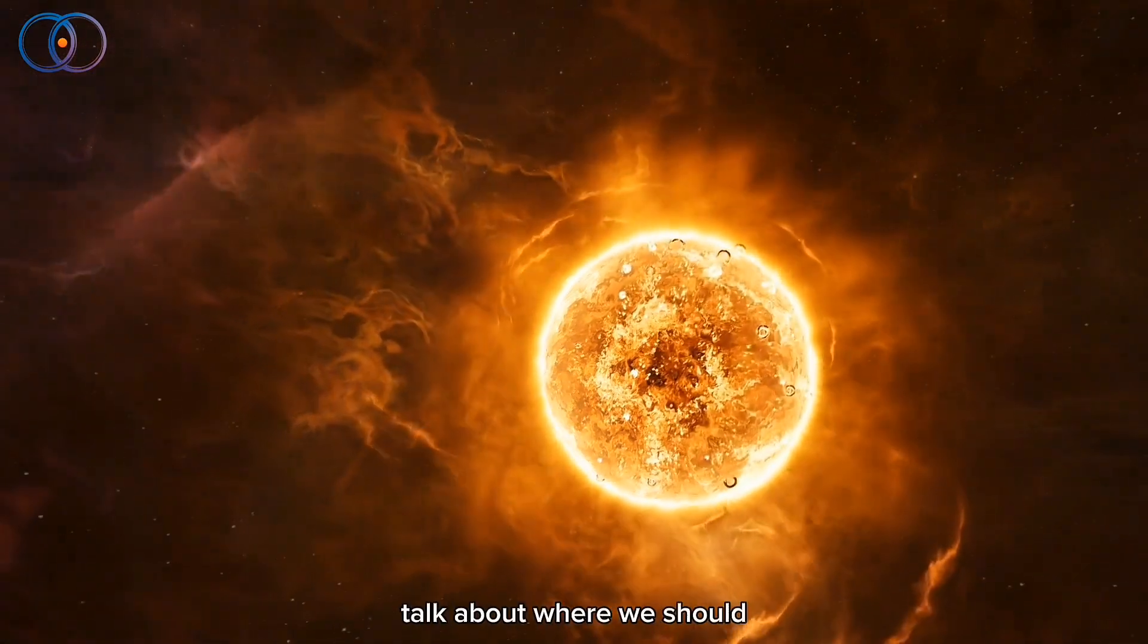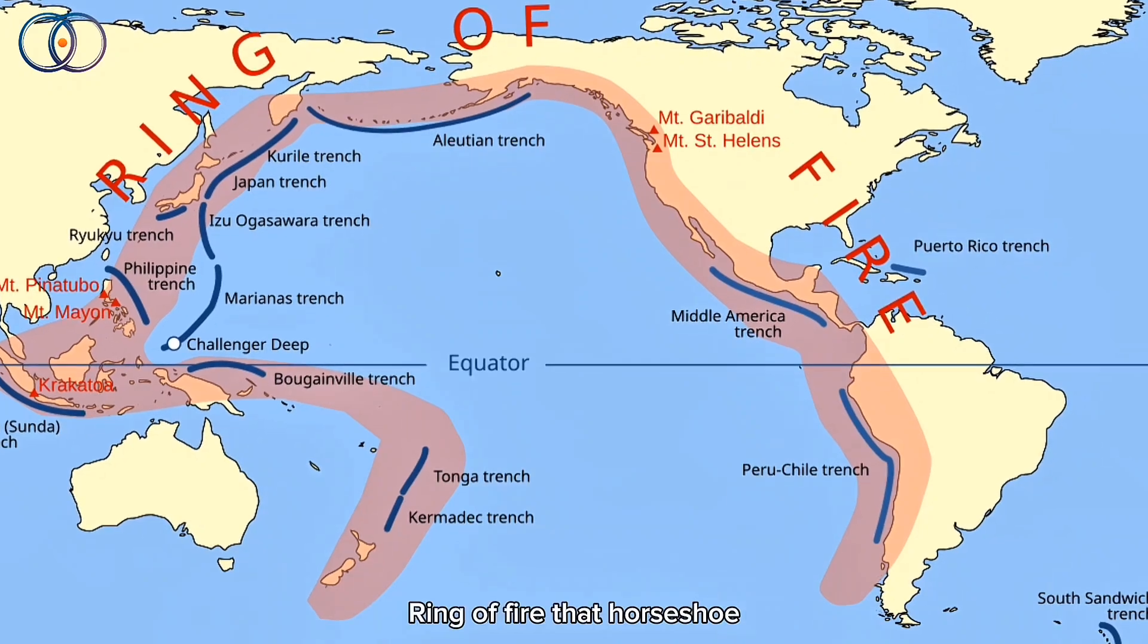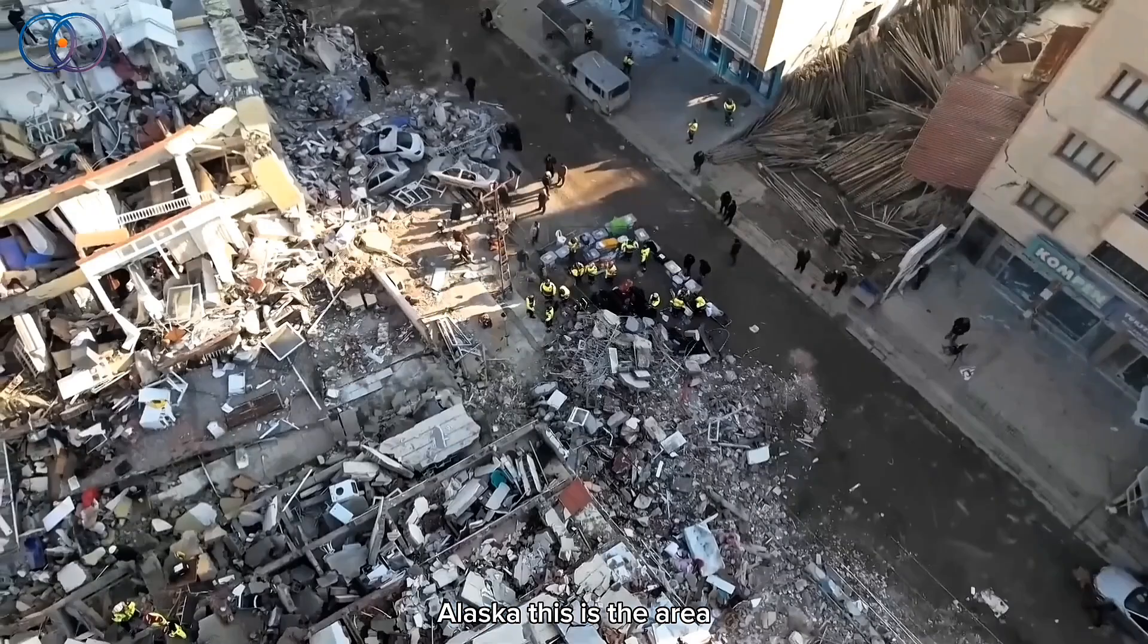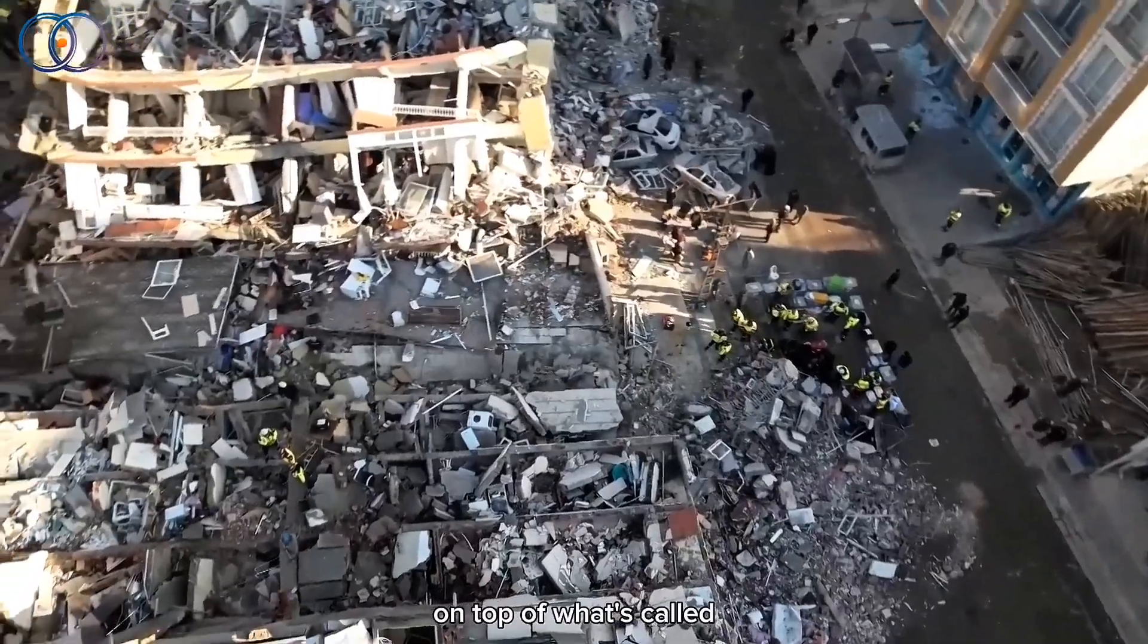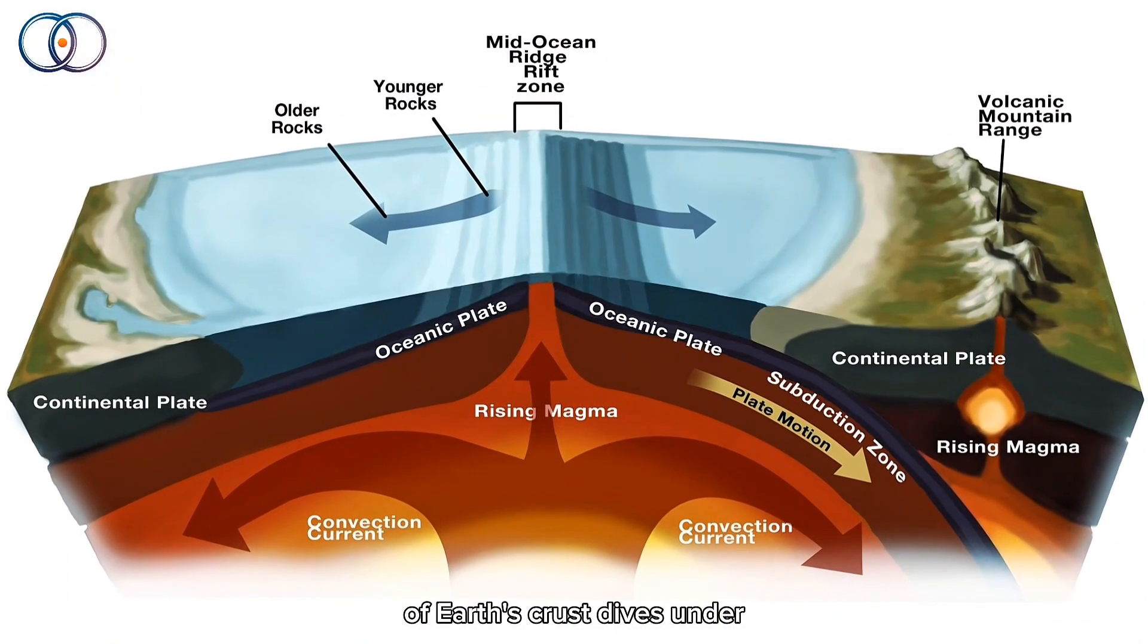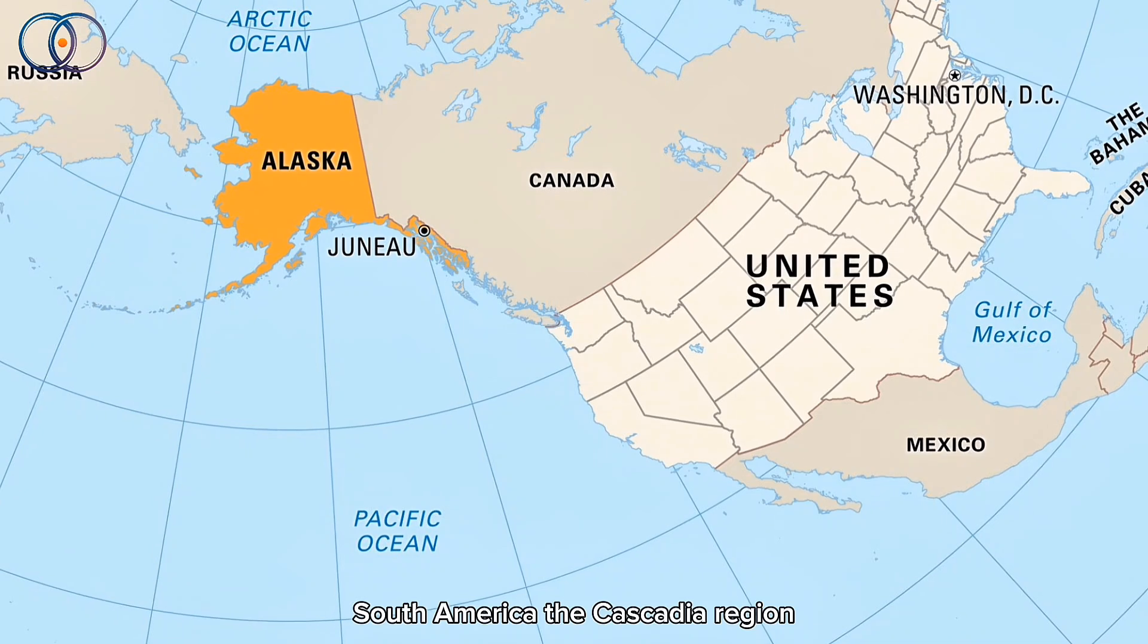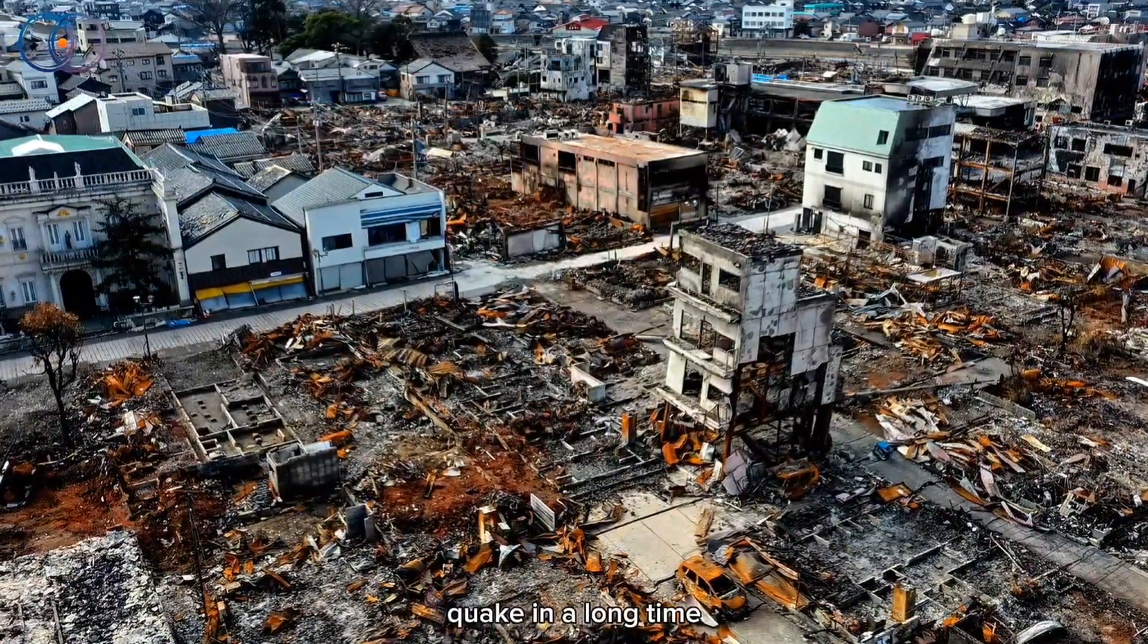Now let's talk about where we should be most concerned. If you live anywhere around the Pacific Ring of Fire, that horseshoe-shaped area going from Japan down to Indonesia, across to South America, and up to Alaska, this is the area where the biggest earthquakes happen. These places are all sitting on top of what's called subduction zones, where one piece of Earth's crust dives under another. That's where the biggest pressure builds up. Places like Japan, the west coast of South America, the Cascadia region in the US and Alaska, they're all at risk. And they haven't had a huge quake in a long time.